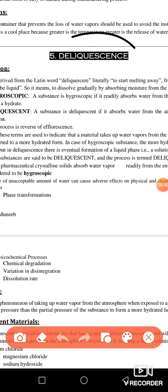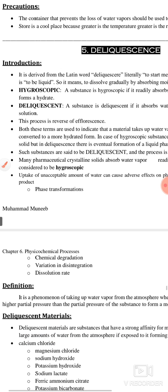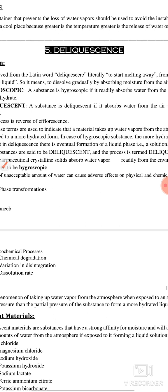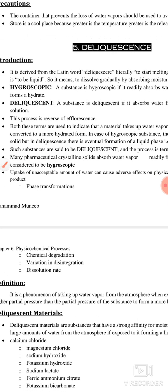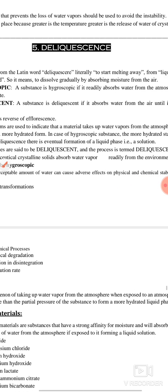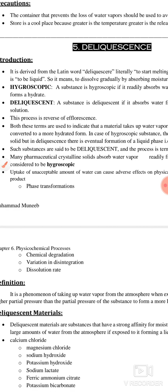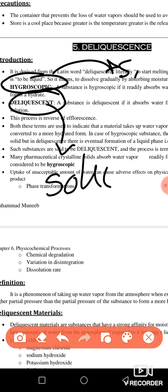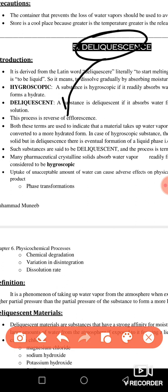The word deliquescence also means to absorb the moisture present in the air. Hygroscopic and deliquescent are two types of substances. Hygroscopic substances absorb water from the atmosphere and form a hydrate. Deliquescent substances absorb water from the air until they form a solution. Hygroscopic substances, however, never convert into solution form — they just take a small amount of water vapors from the atmosphere.